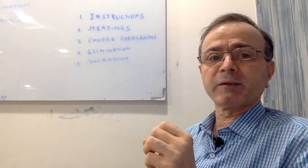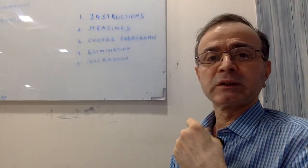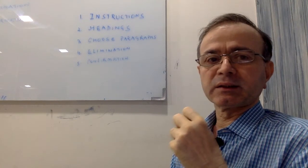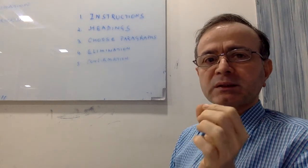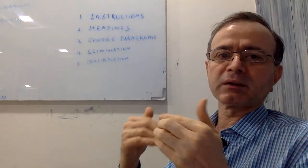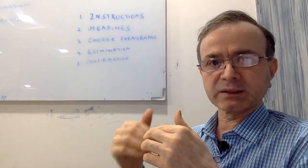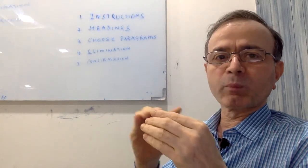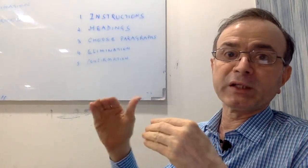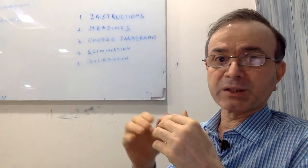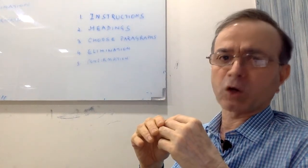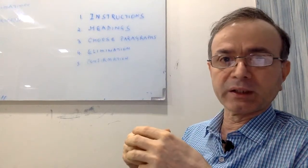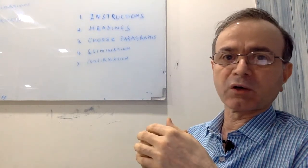I want to outline a five-step process for doing the matching the headings in the reading test. Matching the headings is where you get about six or seven paragraphs in a single passage and you are given about eight or nine headings and you have to match one heading for each paragraph. It's one of the most common question types that comes in the reading passages, whether for general or academic.